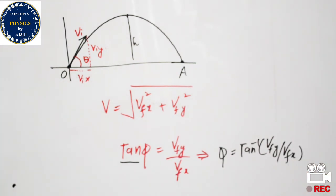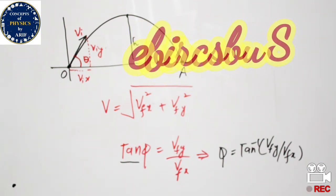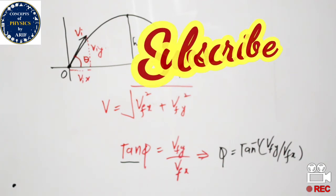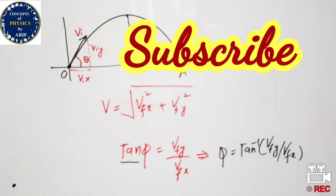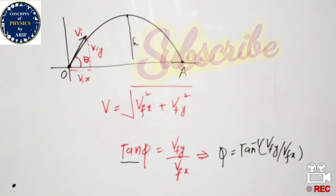Up till now we have discussed projectile motion, how the velocity of an object can be measured or calculated, and how to resolve velocity into rectangular components. In the next video I will discuss the height of the projectile, range of the projectile, and time of flight. Stay tuned, please subscribe to our channel, and see you in the next video. Bye bye.